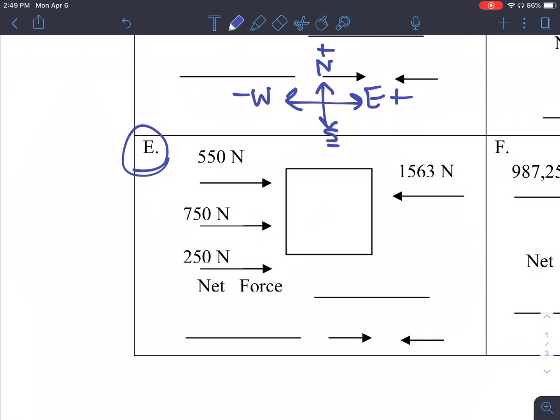That means that all the forces on this side are positive because they're pointing east, and this single force is going to be negative because it is pointing west. So when we are adding up the total net force, those signs need to stay true in your calculation.